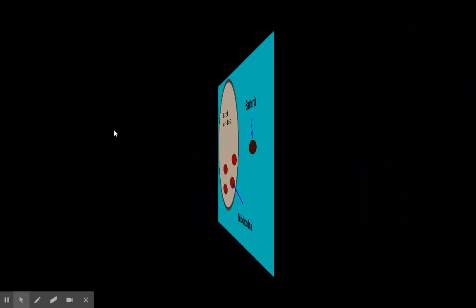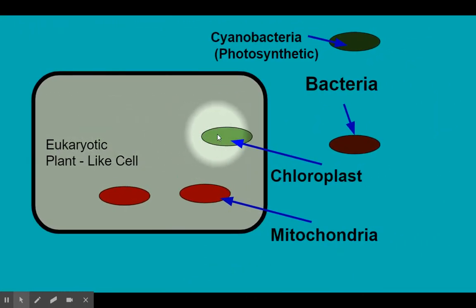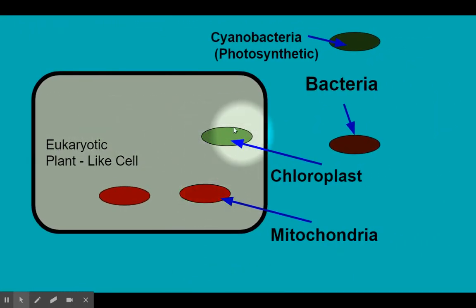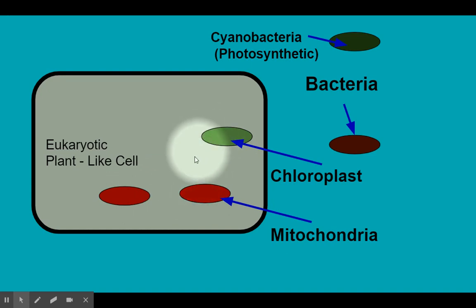What about a plant cell? A plant cell is going to have a chloroplast. A chloroplast and a mitochondria are each bound by their own membrane, each going to have their own ribosomes, and each going to have their own individual DNA. These mitochondria and chloroplasts also have the ability to replicate inside of a cell, very similar to a bacteria.